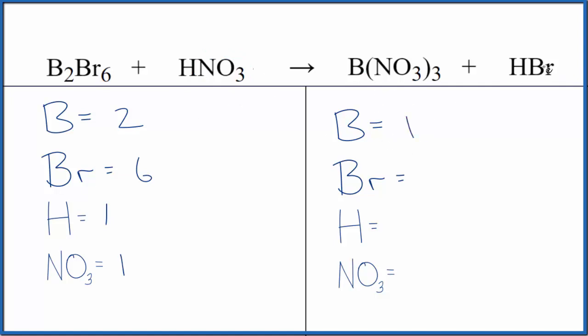Product side, one boron, we have one hydrogen and one bromine, and then we have one nitrate times three. So we have three of those.